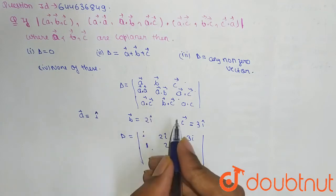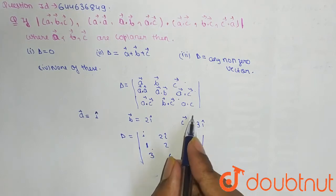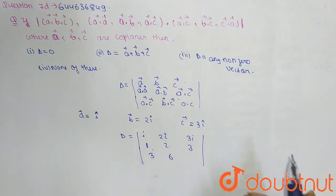Now A cross C will be I cross 3I which is 3. B cross C means 2 cross 3 is 6, and another time A cross C will be 1 cross 3 will be 3.